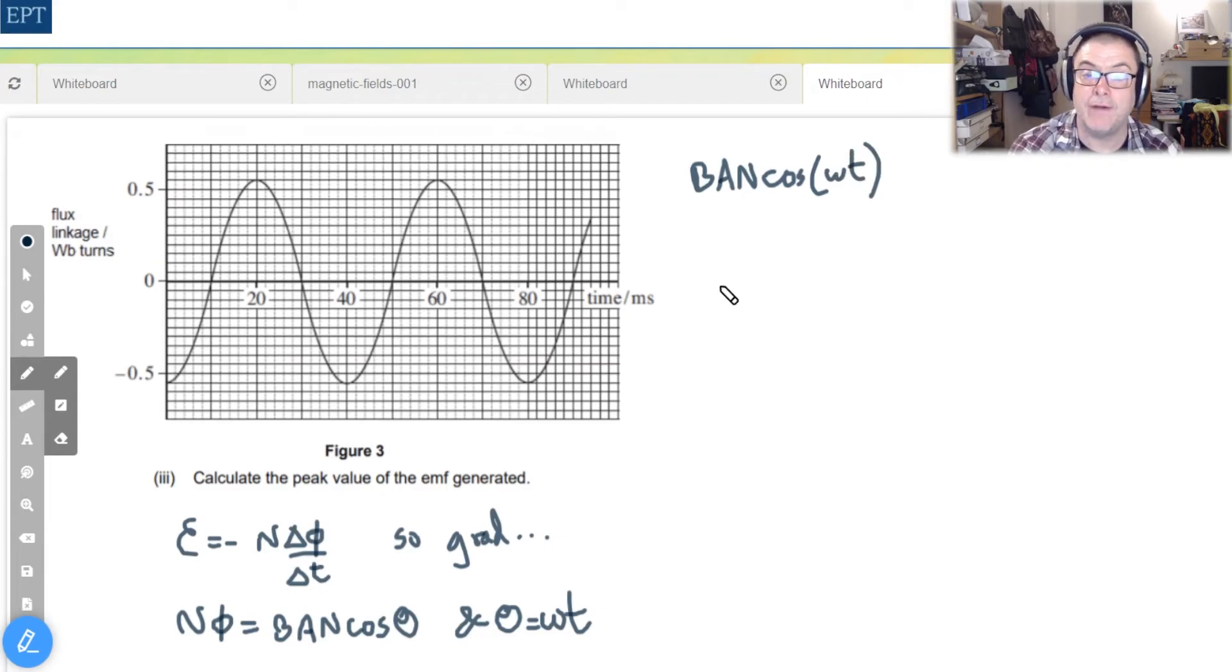That means therefore that B A N cosine θ, or ωt as we're now going to write, is equal to N φ the flux linkage. So we now have a way of working out the flux linkage at any point in the rotation.